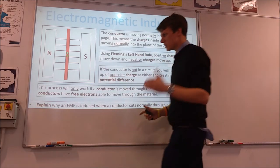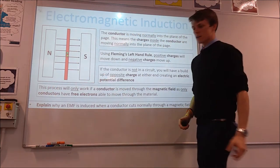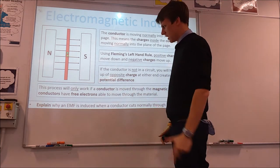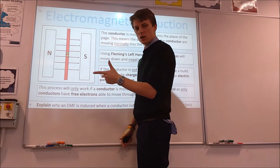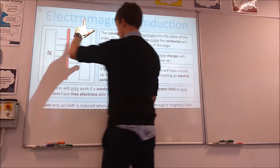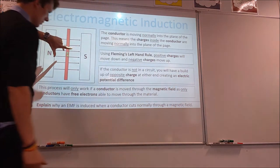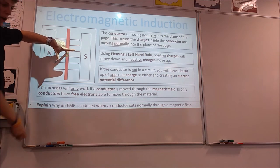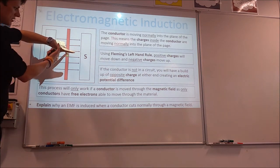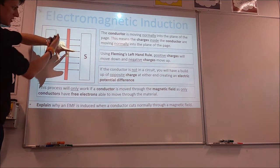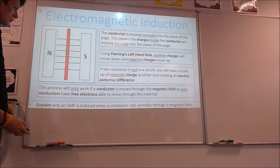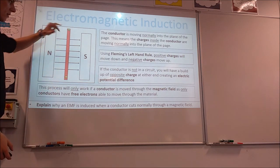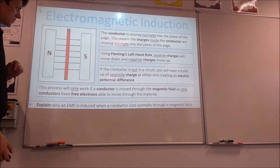So we've got the charges going into the page. If we set up Fleming's left hand rule: we've got positive charges going into the plane of the board, and we've got the field going across. You can see that positive charges are going to travel downwards, which means negative charges would travel upwards. So our positive charge moves this way and our negative charge moves this way.